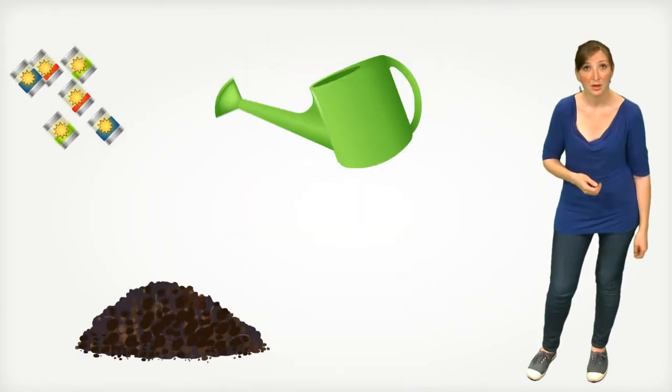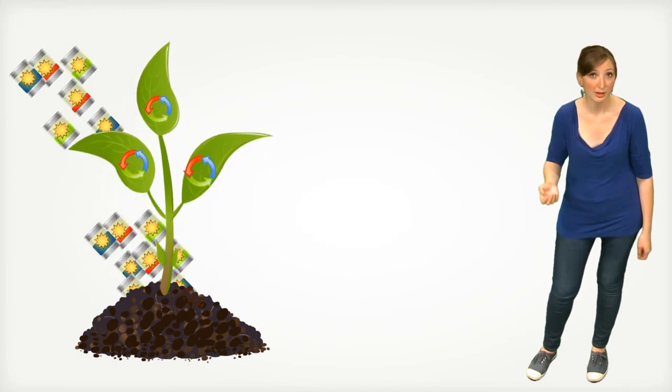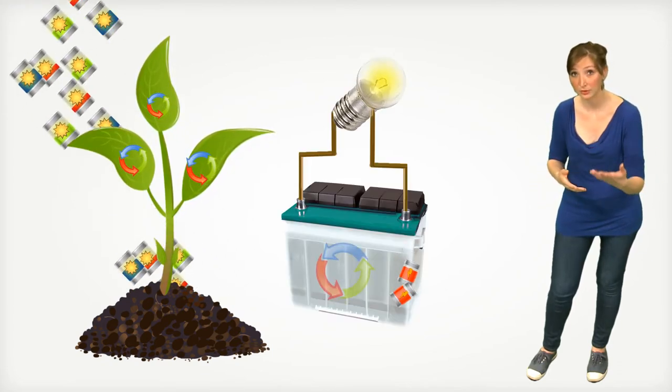There is another way to transform light into electricity, following the principle of photosynthesis or the functioning of a battery. Photosynthesis used by plants to feed uses the light energy to produce chemical reactions, and a battery uses chemical reactions to produce electricity.